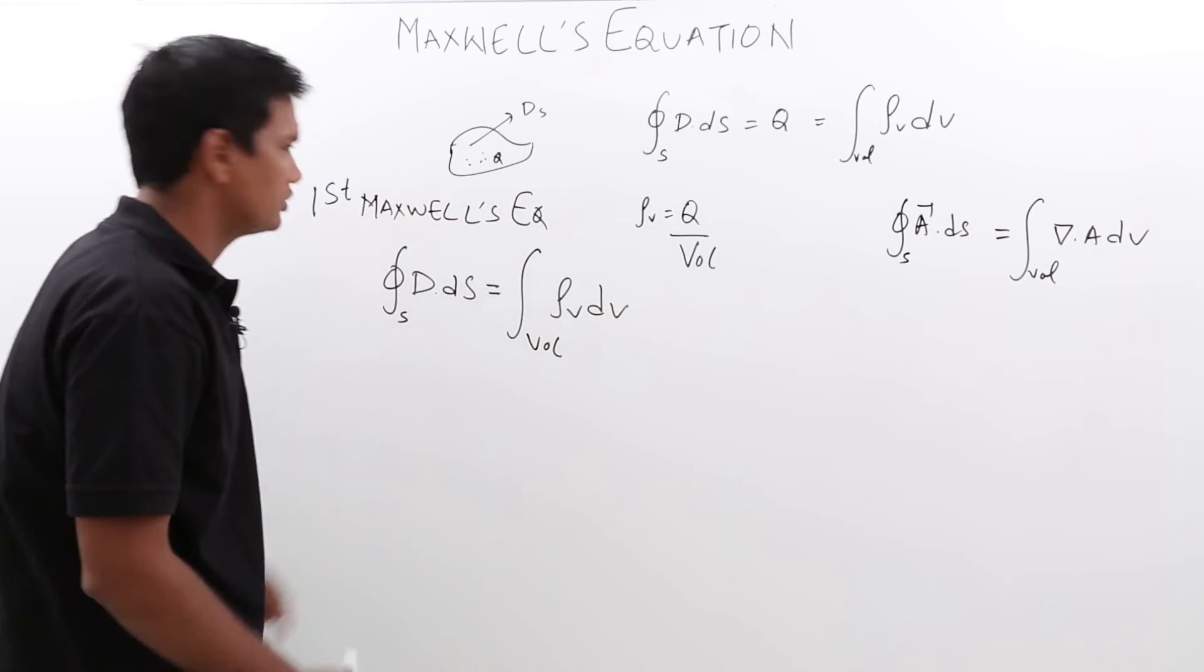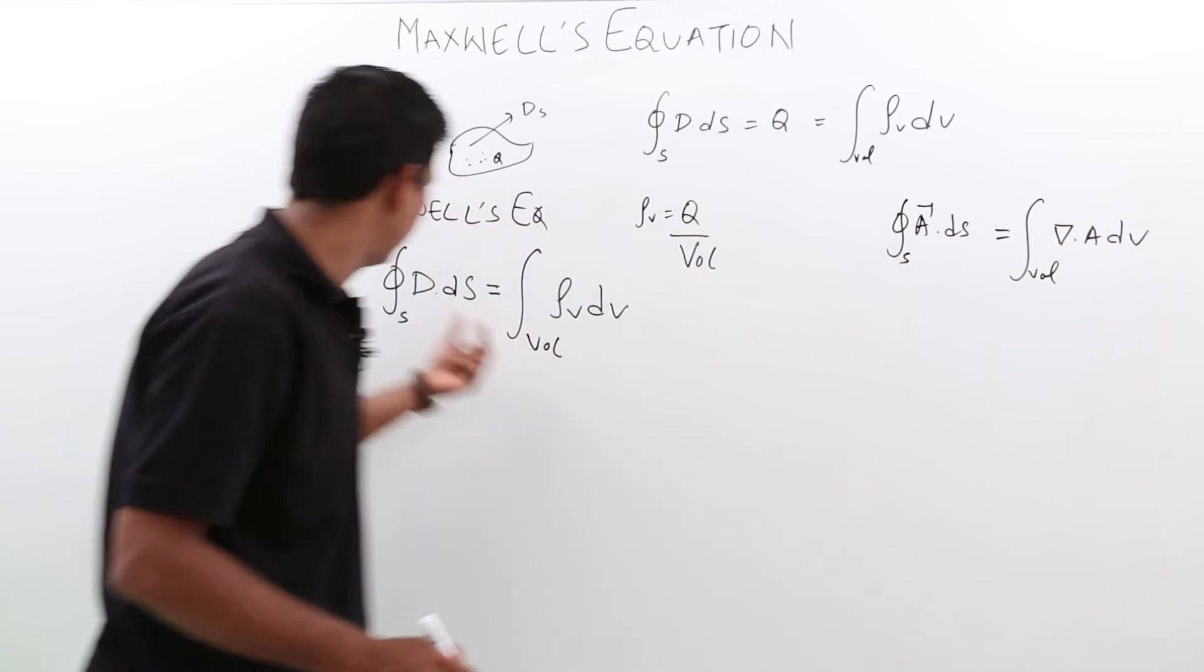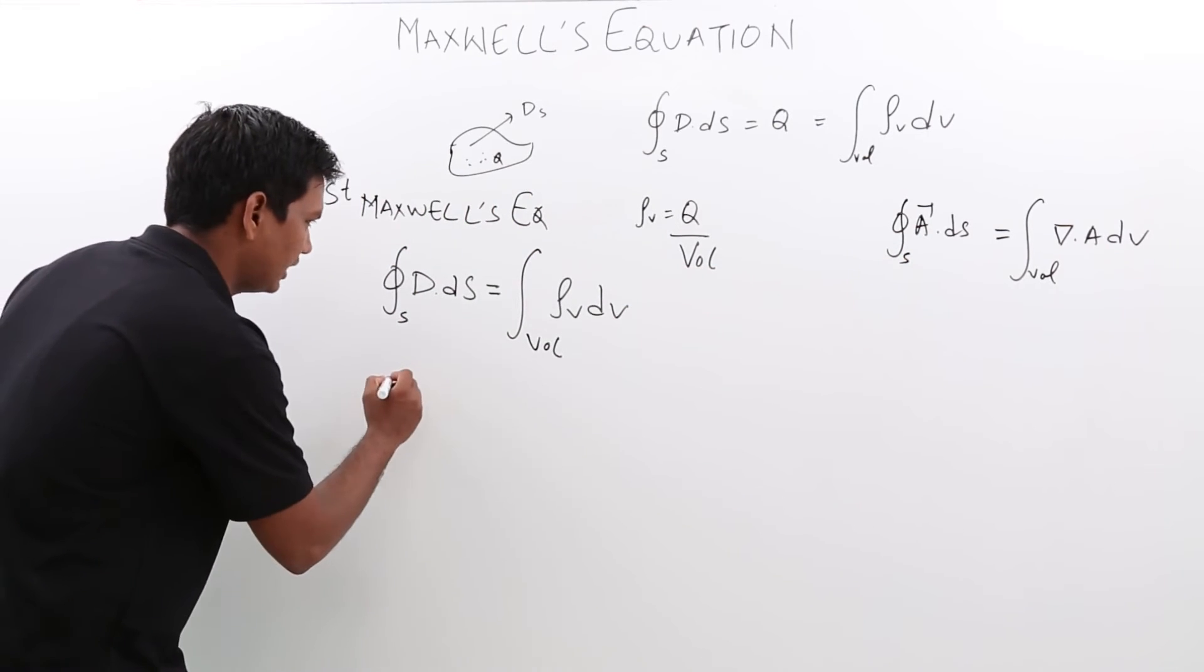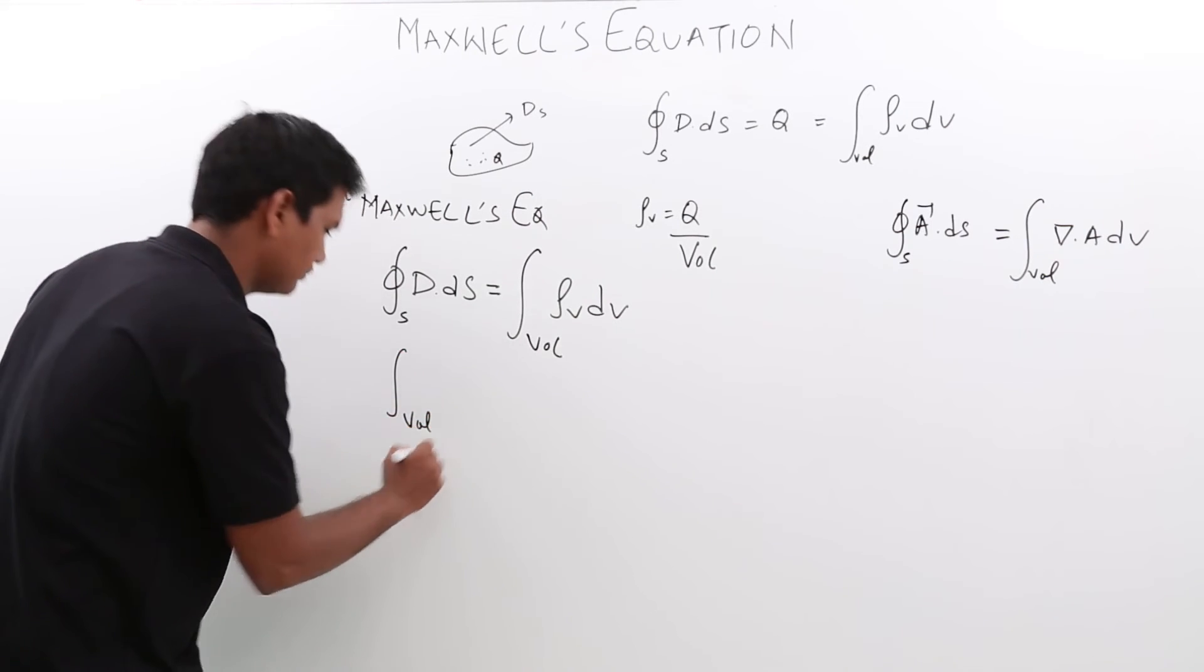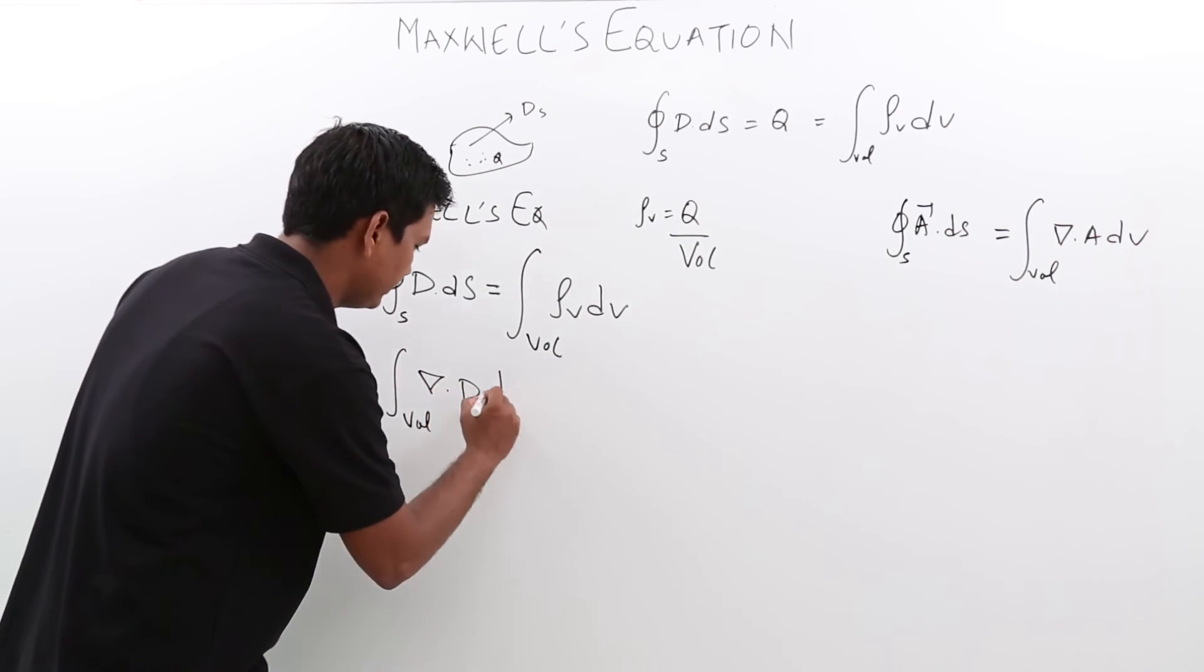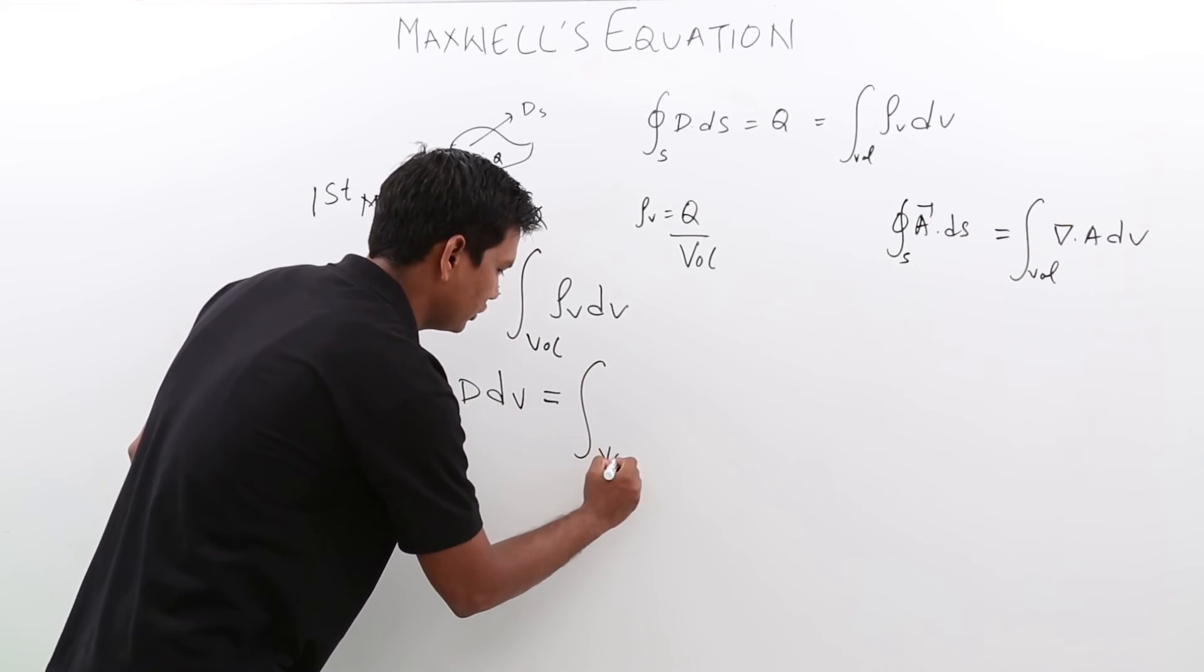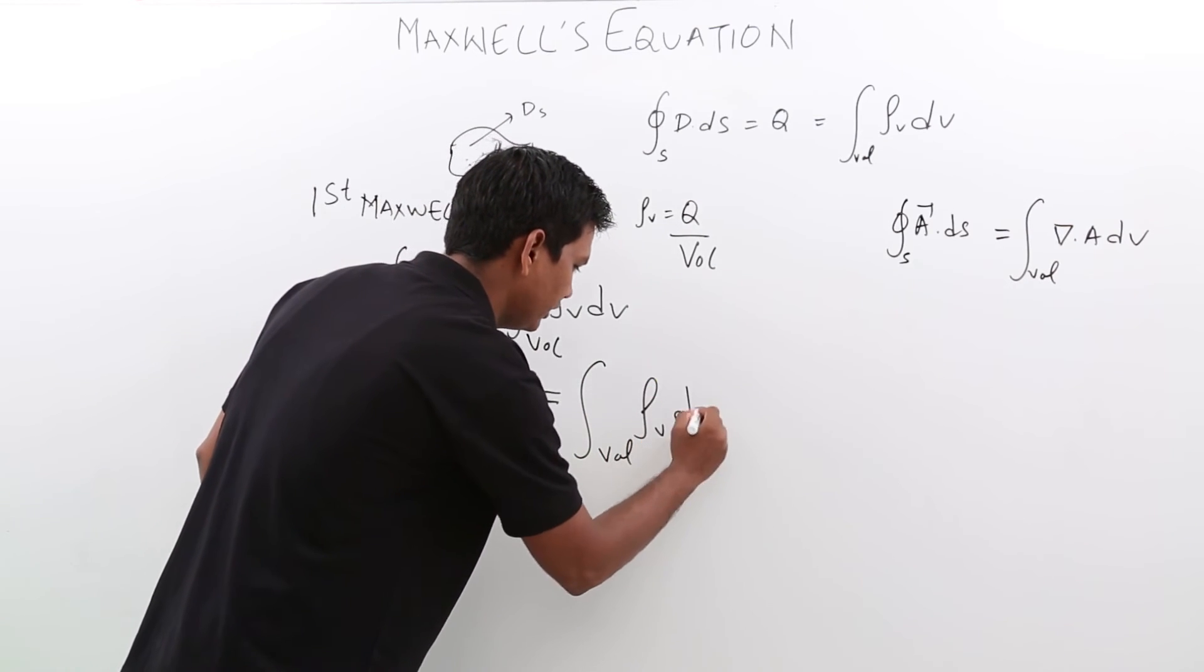Now, we will apply the same here. So A is D in our case. It would be the volume integral of del dot D dV equals the volume integral of rho_v dV.